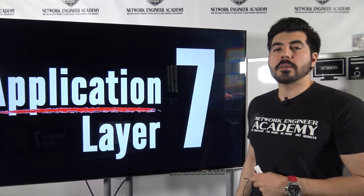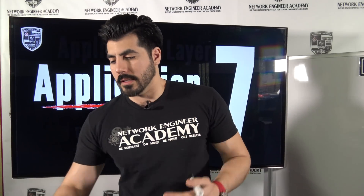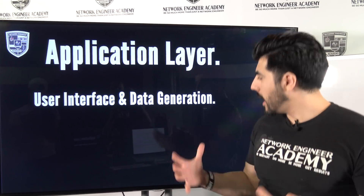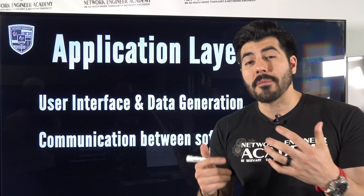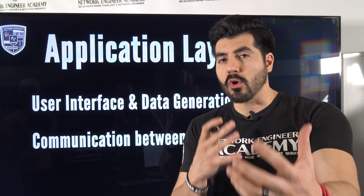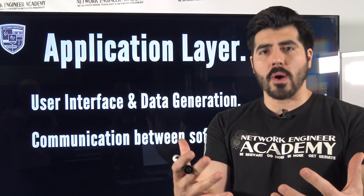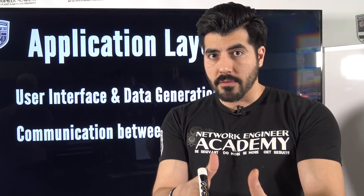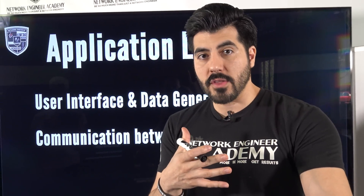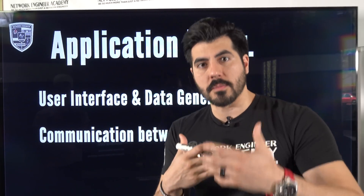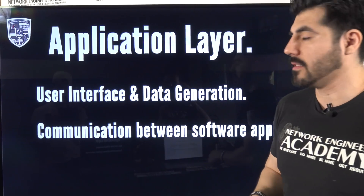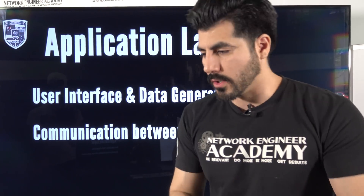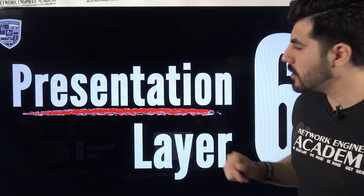The application layer is layer seven. What it does is user interface and data generation — communication between software applications. For example, when you open Google Chrome and browse the internet, that interaction between the application and the end user is what starts the OSI model process.